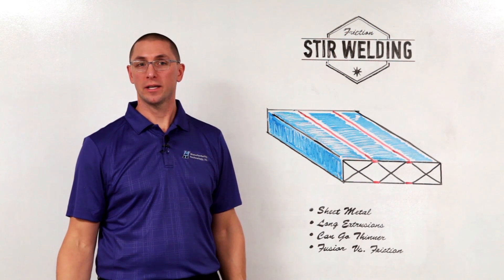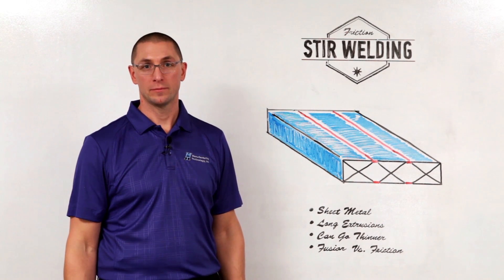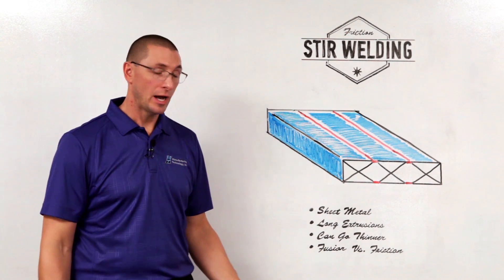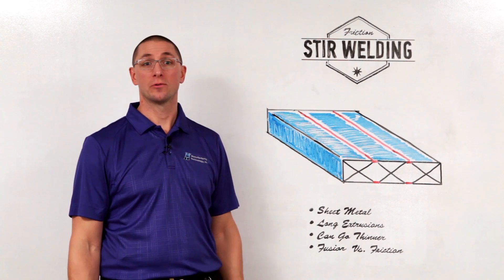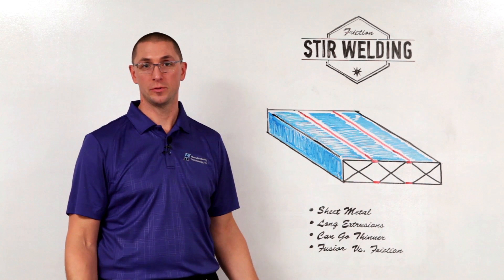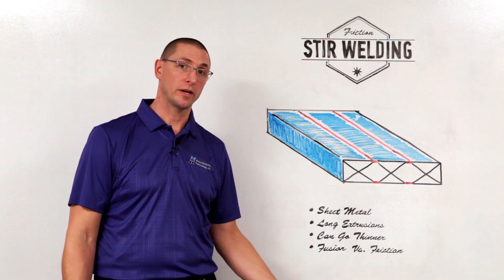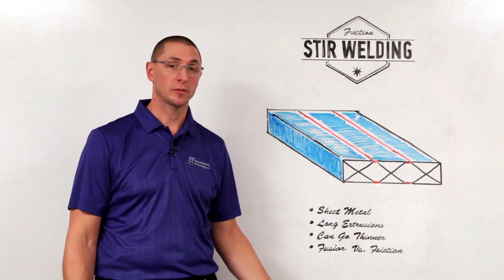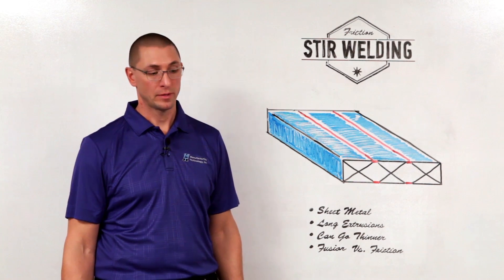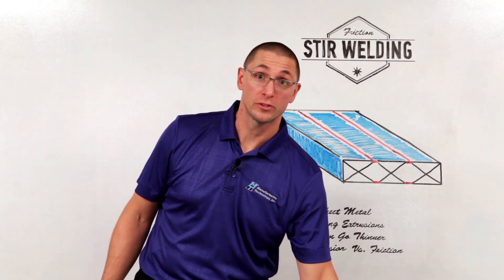Friction stir welding is another example of a friction welding technique. Friction welding uses high force and relative motion in order to create heat and forge two parts together. In the other friction welding processes we've talked about, one of the two parts is typically moving. In friction stir welding, both parts are stationary.